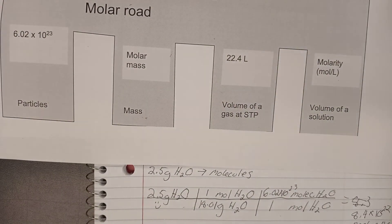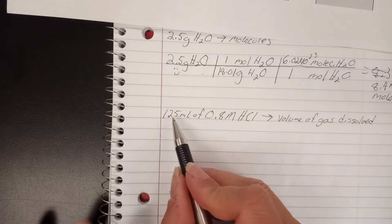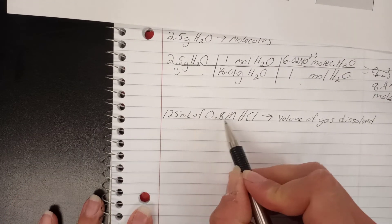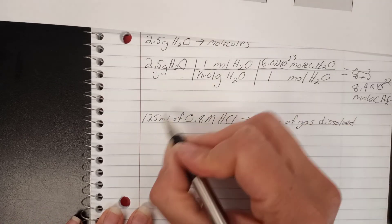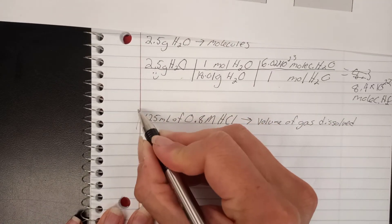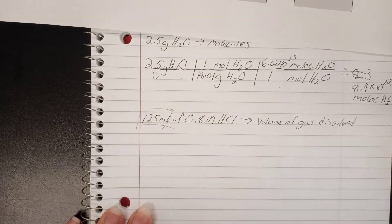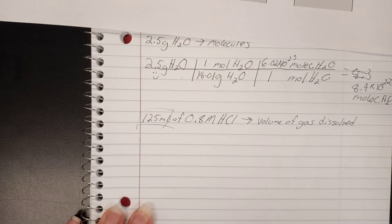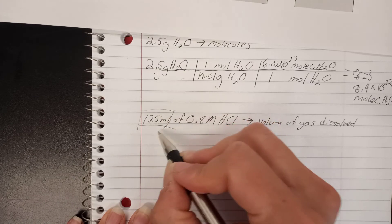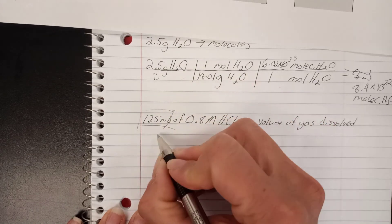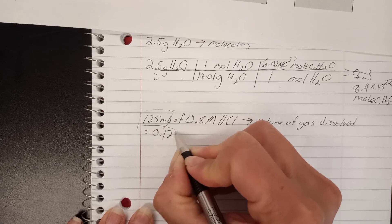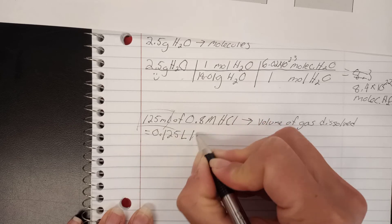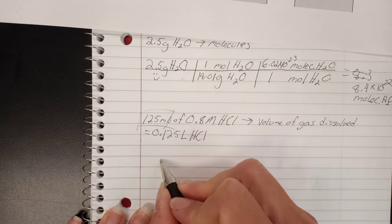Let's look again at another one, specifically this time I want to look at what to do with molarity. If I have 125 milliliters of 0.8 molar HCl and I want to go to volume of gas dissolved, I'm starting with this volume of a solution, but remember that our volumes needed to be in liters. So that's the first thing I need to do, rewrite this as 0.125 liters HCl. That's going to be my starting number.